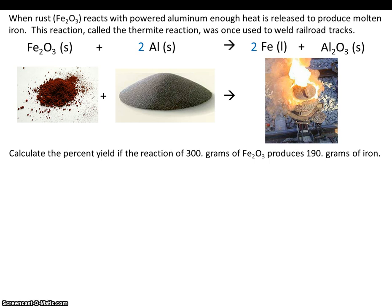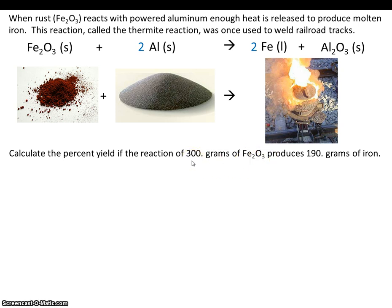Calculate the percent yield if the reaction of 300 grams of rust produces 190 grams of iron. They've given us two numbers here, and one of the tricks is to discern which is our given and which is our actual yield. How much we're actually producing is 190 grams of iron. What we're starting with, or are given, is 300 grams of rust. So let's go ahead and calculate theoretically how much iron we could make, and then we'll compare it to 190, which is how much we actually made.